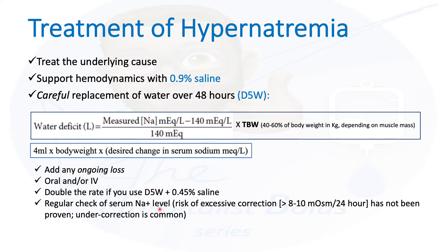Most importantly, just like in hyponatremia, you have to check the serum sodium serially — every two, four, or six hours depending on severity and how unstable the patient is. The correction rate is similar: no more than 8 to 10 mEq per day, although the risk of overcorrection complications is less well-studied than in hyponatremia.